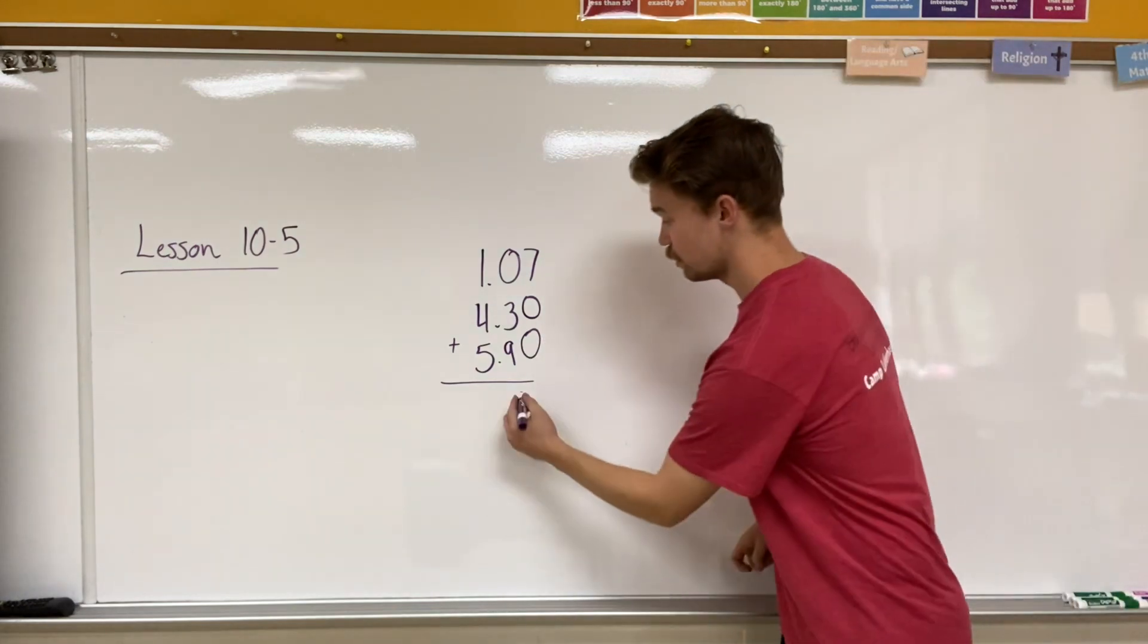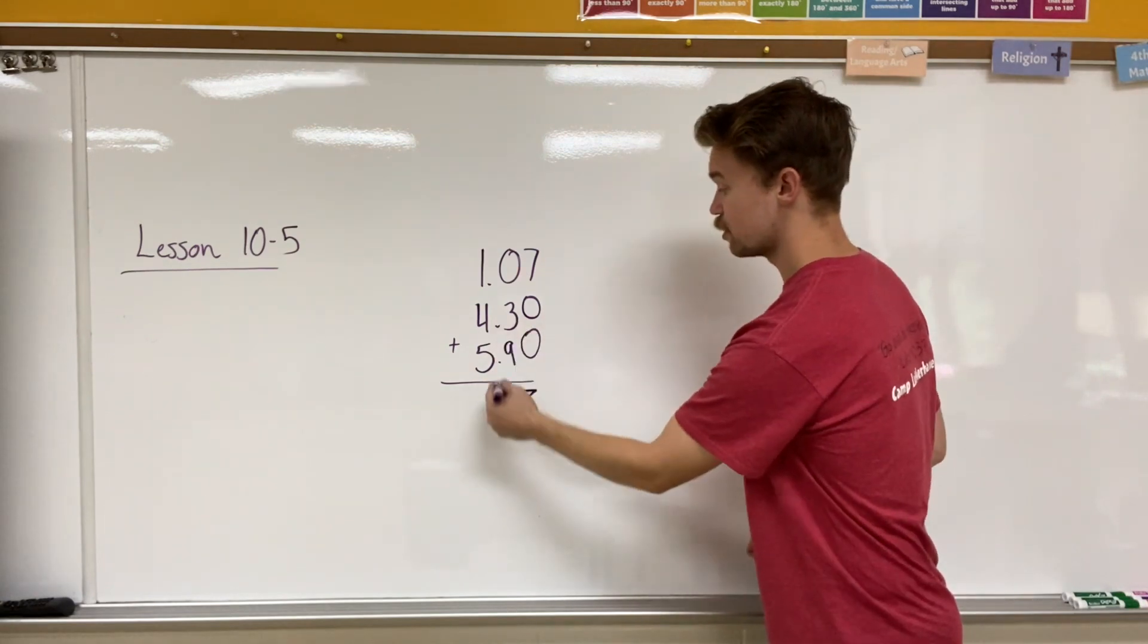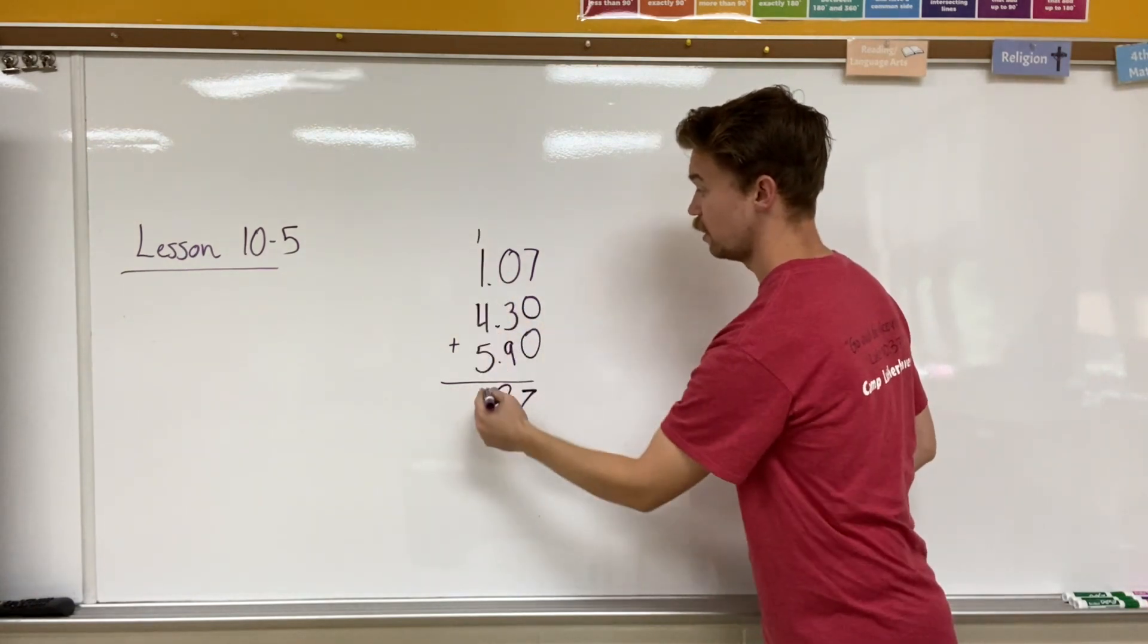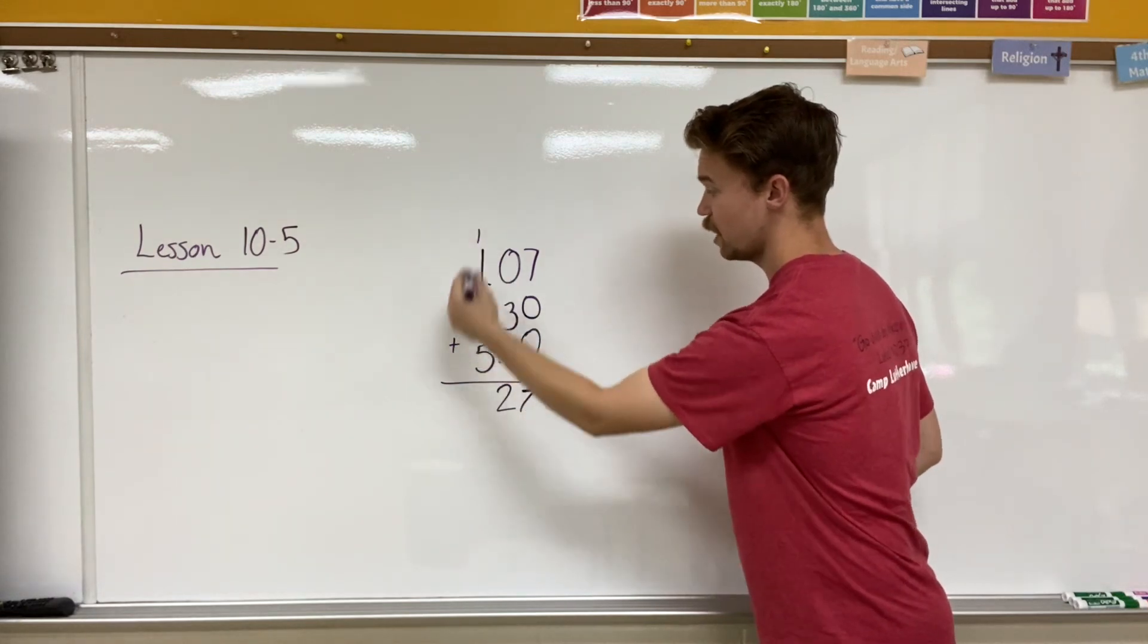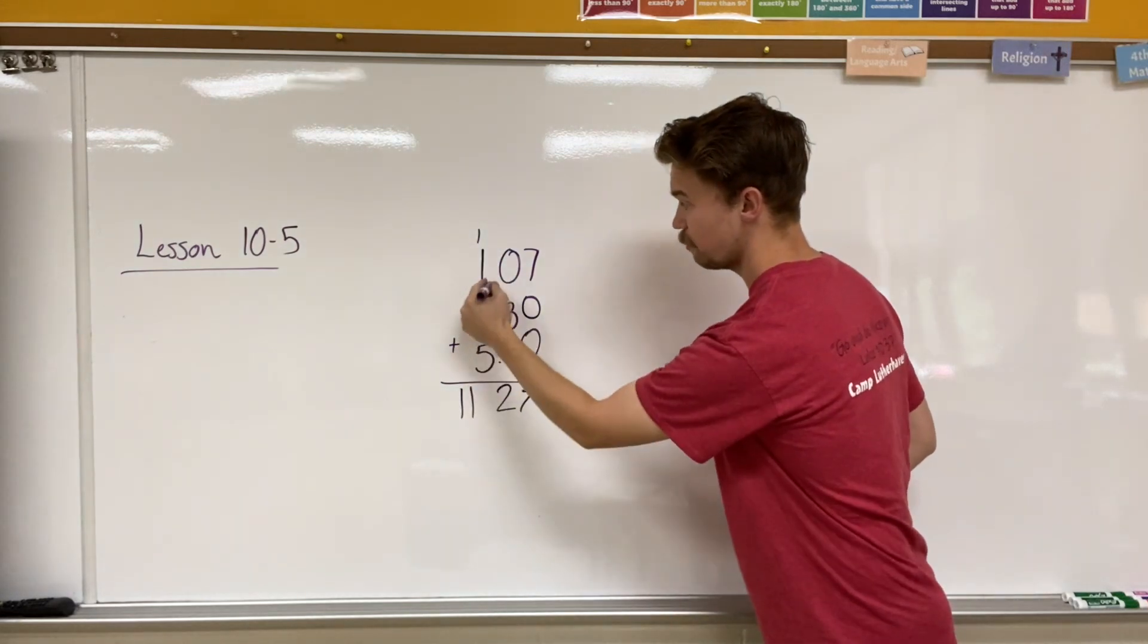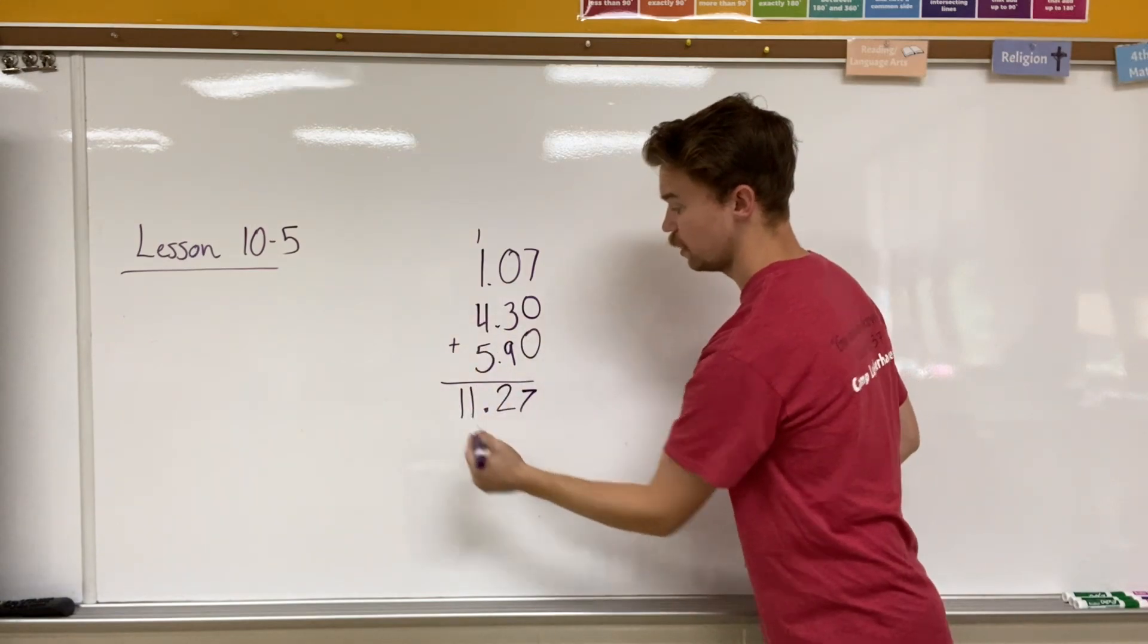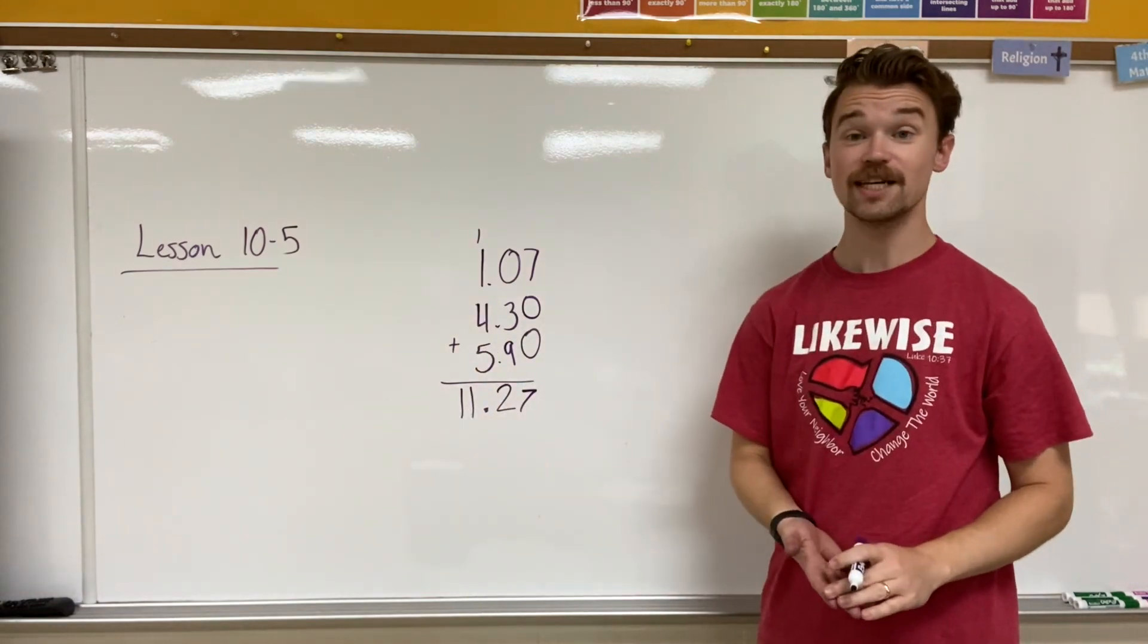So seven plus zero is seven, nine plus three is twelve, carry the one, and one plus one is two. Actually I could do the one and the four is five, five and five is ten, plus one is eleven, and make sure that my decimal places are all in line. So 11.27 is my answer.